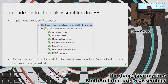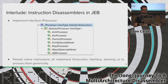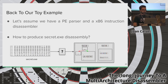JEB instruction disassemblers implement an interface called IProcessor. The parsed instructions implement an interface called IInstruction, providing access to mnemonics, operands, and control flow information. This means parsed native instructions can be processed generically under this interface.